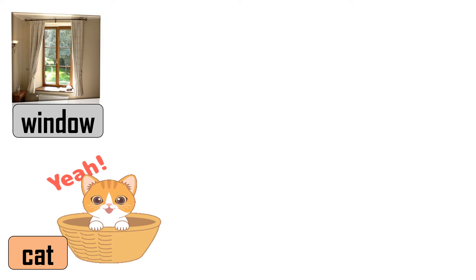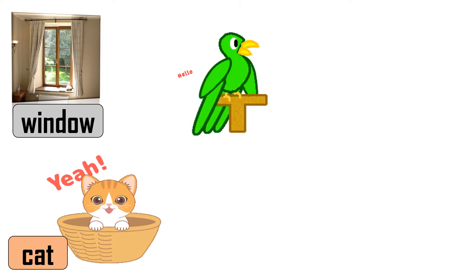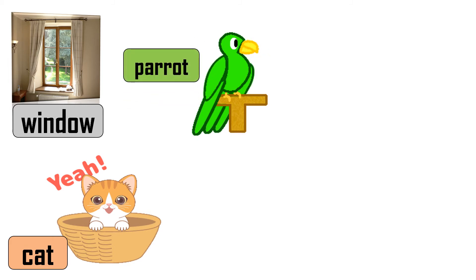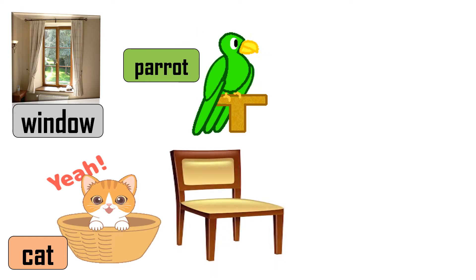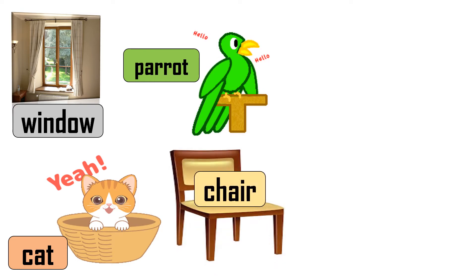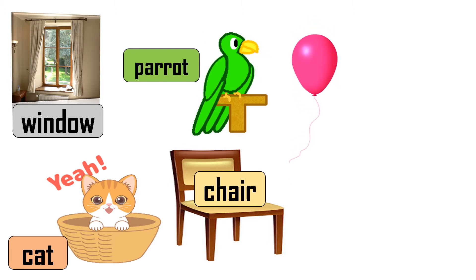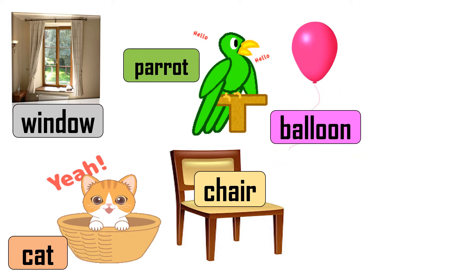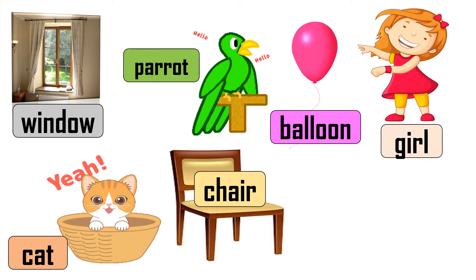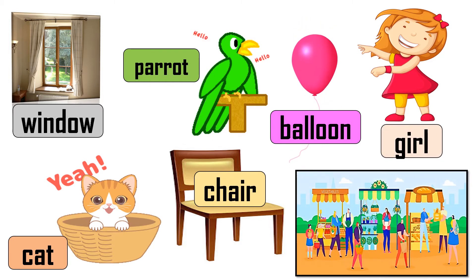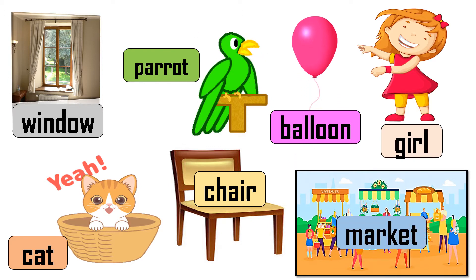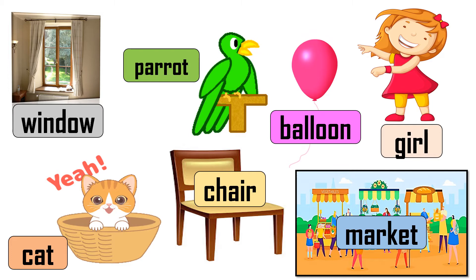The first picture is of a window. The second picture is a cat — a pussy cat, which some people have at their home. Then this is a parrot. The thing on which we sit at home is a chair. The next picture is of a balloon. Then comes a girl. And the next picture was of a market, where we go and buy fruits, vegetables, and other things. So here we have named all those pictures.